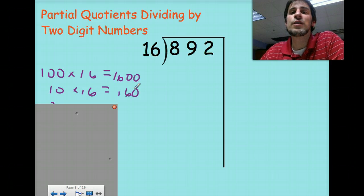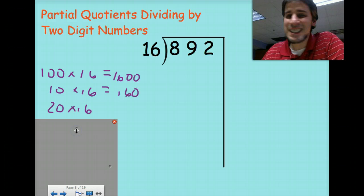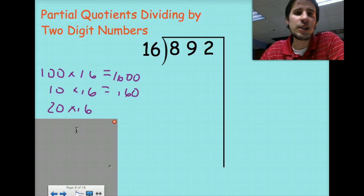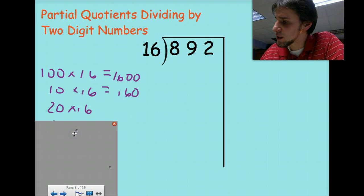This is where I encourage you to think of doubles. Doubled it because if you know ten times sixteen is going to give you only sixteen, double that because twenty is just going to be double what ten is. So doubling sixteen will give me thirty-two.